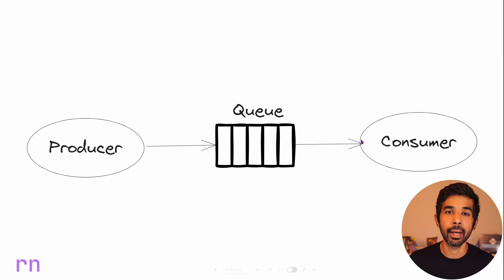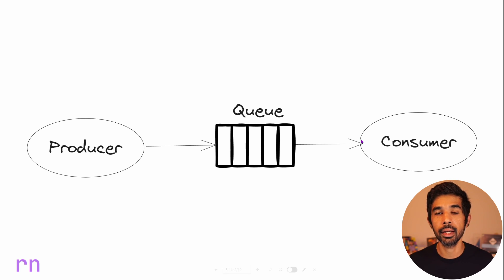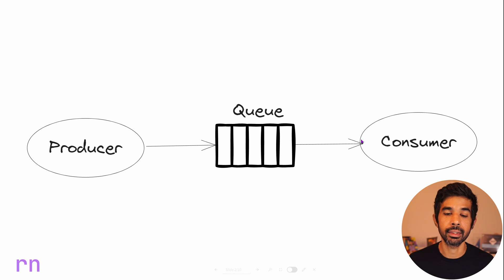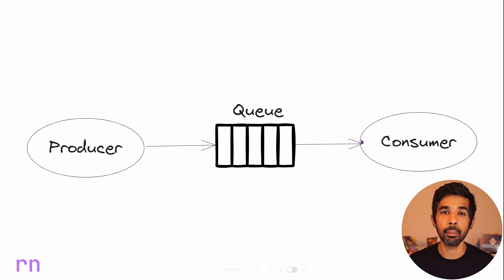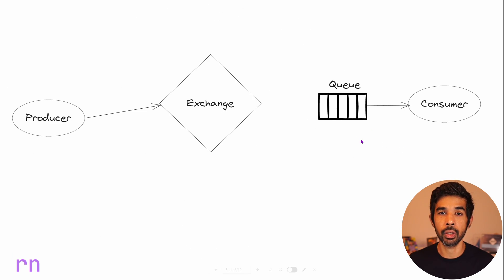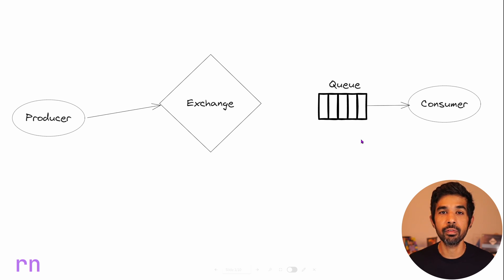Typically when we think about a message-based application, we think about a producer, a queue, and a consumer. The producer produces the message, also known as the sender, and the consumer consumes or receives the message, also known as the receiver. The producer sends messages to the queue and the consumer picks them up. However, in RabbitMQ, the producer does not send the message directly to the queue. The producer sends the message to an exchange, which is responsible for routing these messages to the different queues.